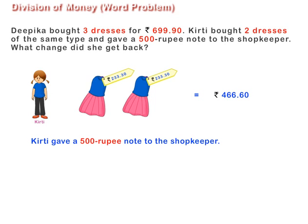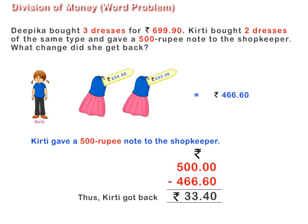Keerti gave a Rs. 500 note to the shopkeeper. So, to find out the change she got back, we will subtract Rs. 466.60 from Rs. 500. Thus, Keerti got back Rs. 33.40.